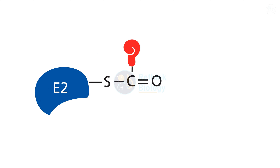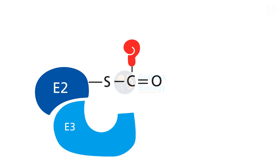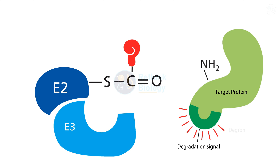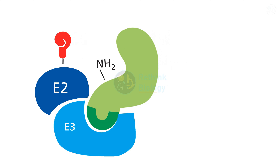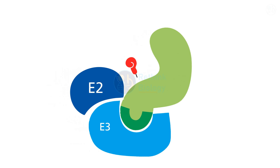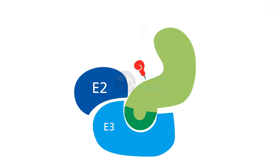E2 then interacts with E3, which recognizes specific degradation signals on the target protein. These signals are called degrons, and they can be amino acid sequences, post-translational modifications, or protein-protein interactions. E3 binds to the degrons and brings the target protein close to E2, which transfers the activated ubiquitin to a lysine residue on the target protein.